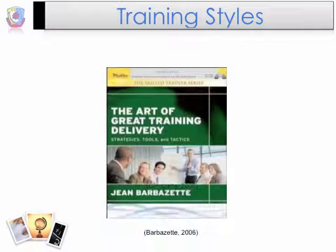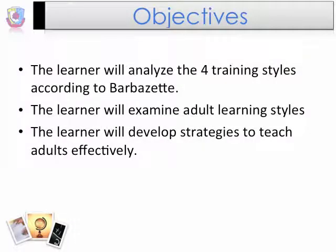For the purpose of this lesson and to grasp the content provided from the graduate class, we will focus on the training styles presented in the text by Jean Barbizet, The Art of Great Training and Delivery. The objectives for today are to learn about the four training styles, analyze what each consists of, and how as a trainer you can relate to each style. We will also study adult learning styles and why adults desire learning, with the hope of designing strategies to use in the training classroom to teach adults effectively.